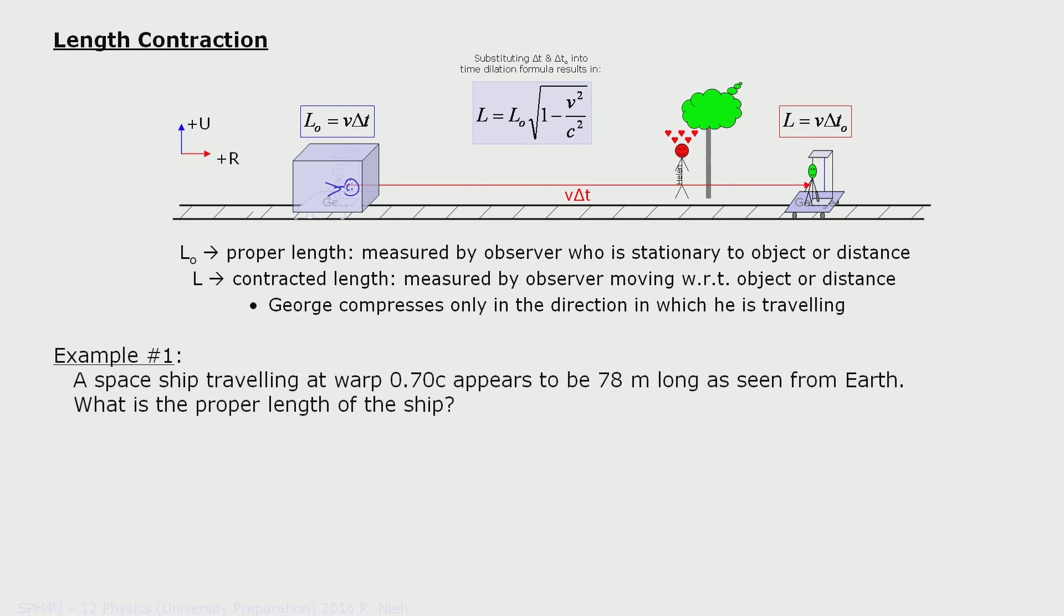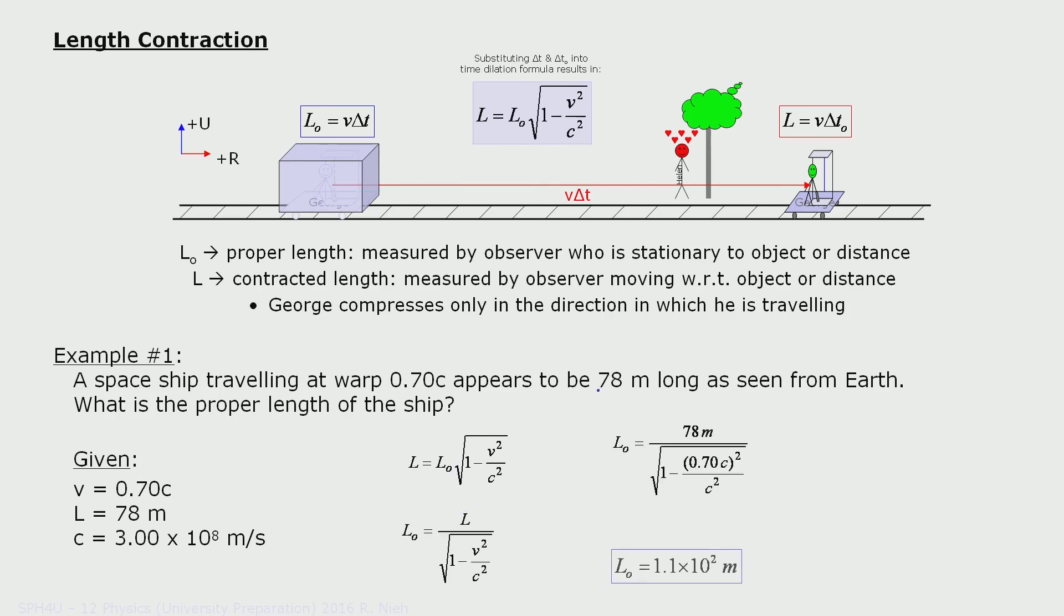Here's another example. Let's say a spaceship is traveling at warp 0.7 of the speed of light, and it only appears to be about 78 meters from Earth's perspective. The question is, what is the true length of the spaceship, or what is the rest length of the spaceship? How about I give you a moment to calculate through this? Did you get that answer? As a reminder, we're trying to look for the rest length, or L-naught. So we need to take this equation and bring the square root down to the denominator before solving.